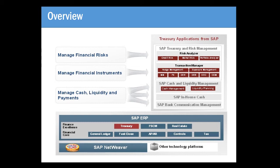The second goal of finance departments is to manage financial risks. There are three analyzers that the system uses to support the trading activities happening in the transaction manager. The credit risk analyzer measures, analyzes, and controls counterparty default risk.